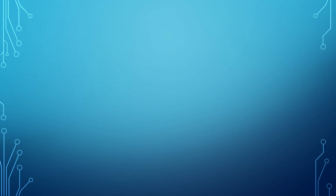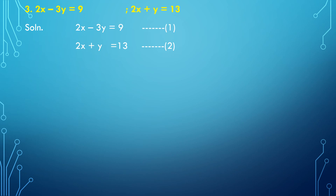Next is example number 3 from the textbook. The two equations are 2x minus 3y equal to 9 — equation number 1 — and 2x plus y equal to 13 — equation number 2. Let's see the solution.